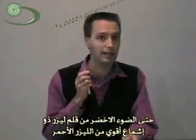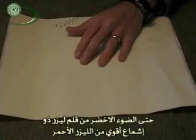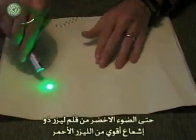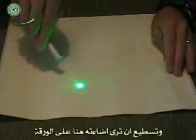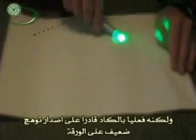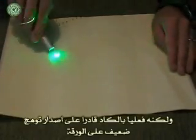Even a green light laser pointer — green being higher energy than red — you can see it's very bright on the paper here, but it just barely leaves a little trace behind.